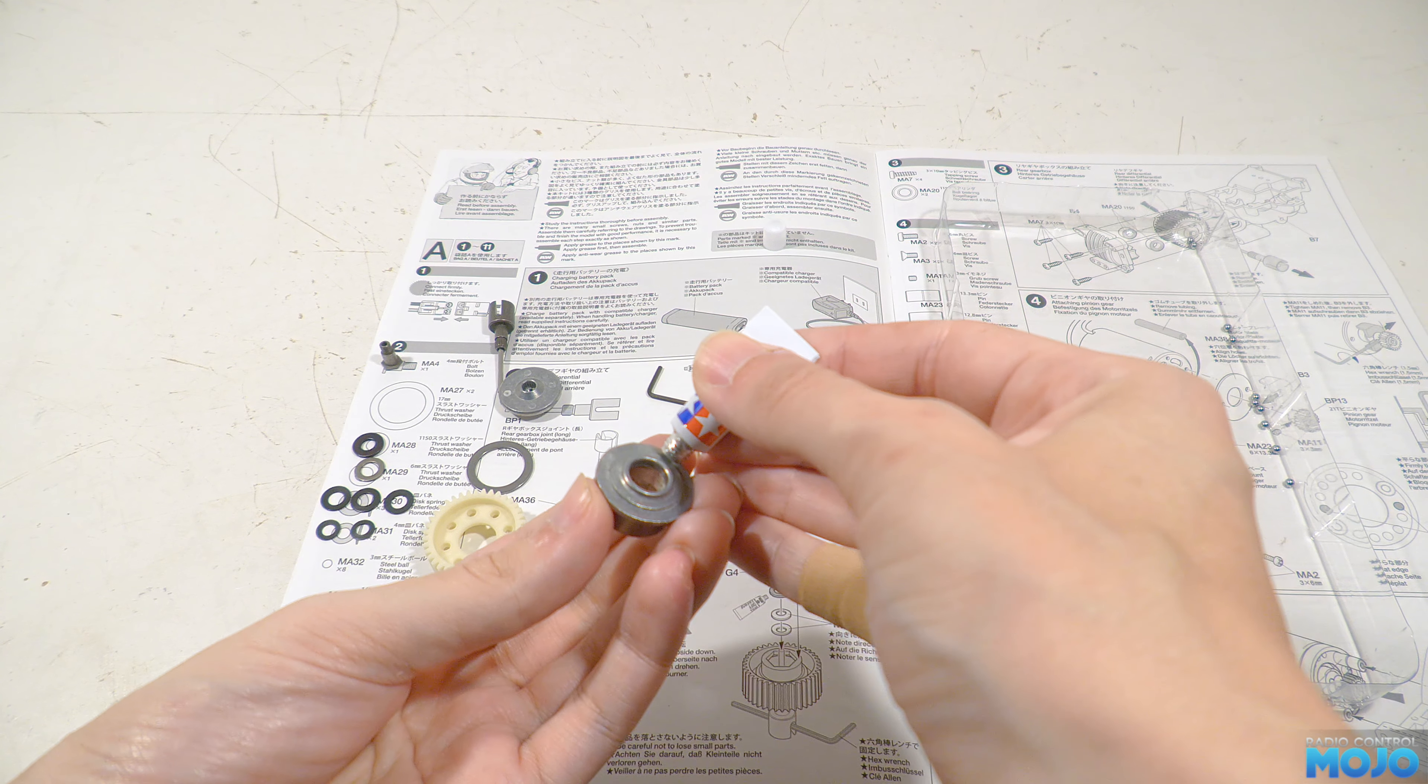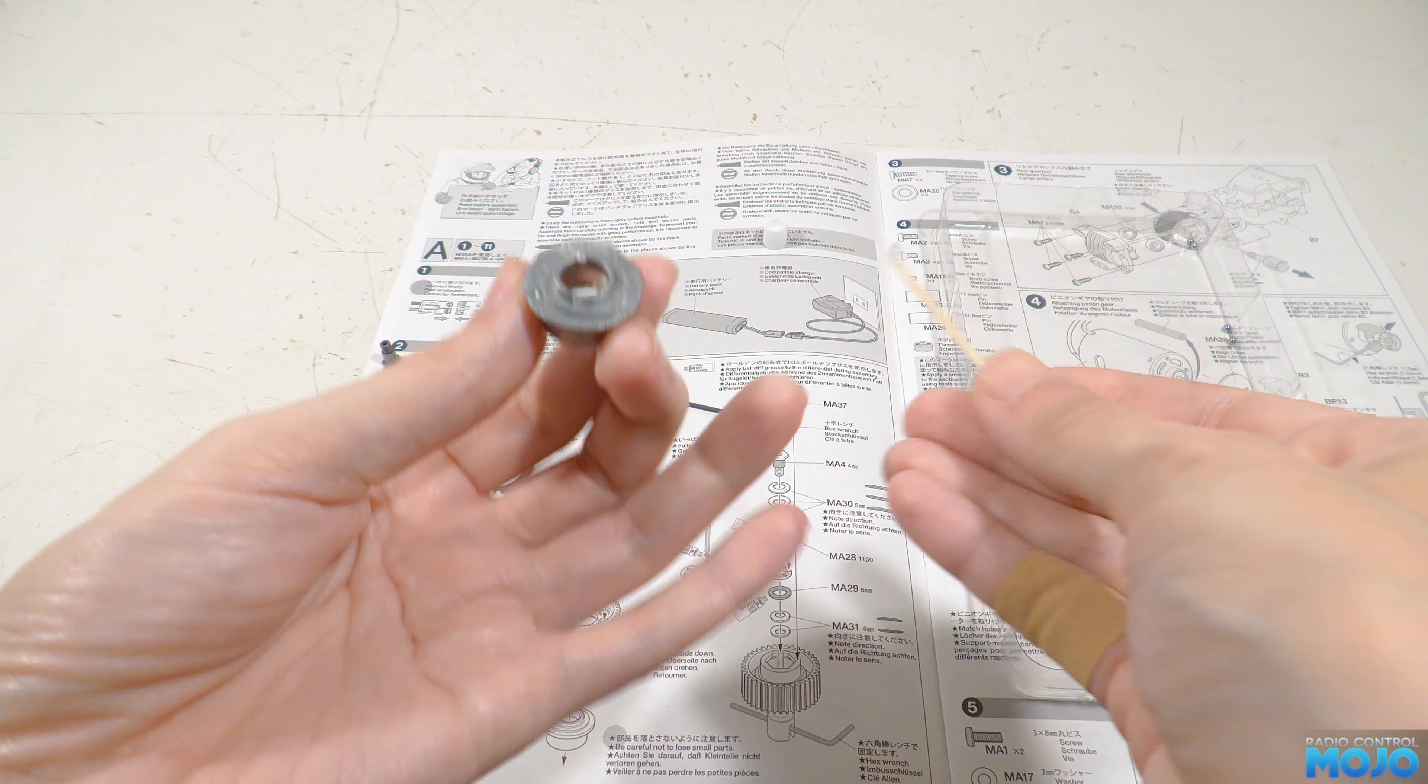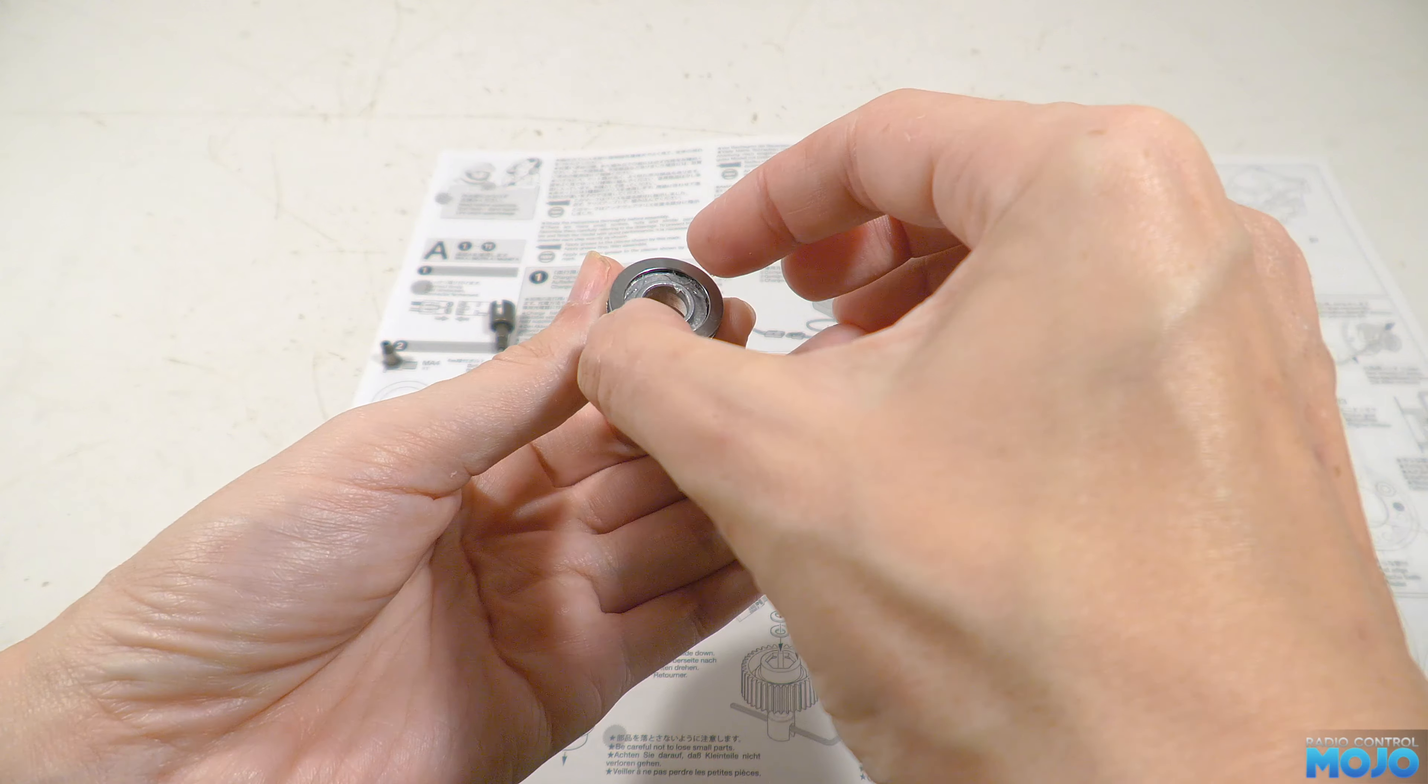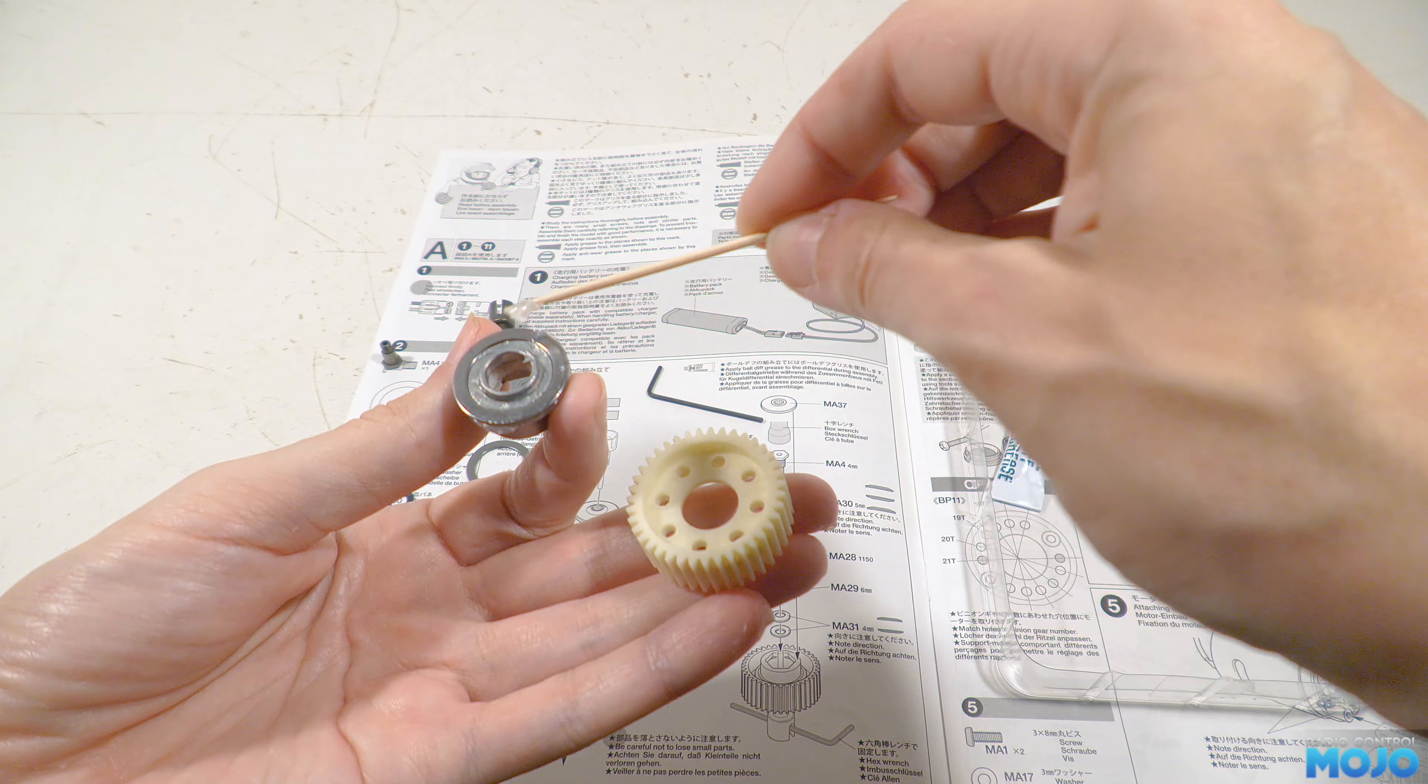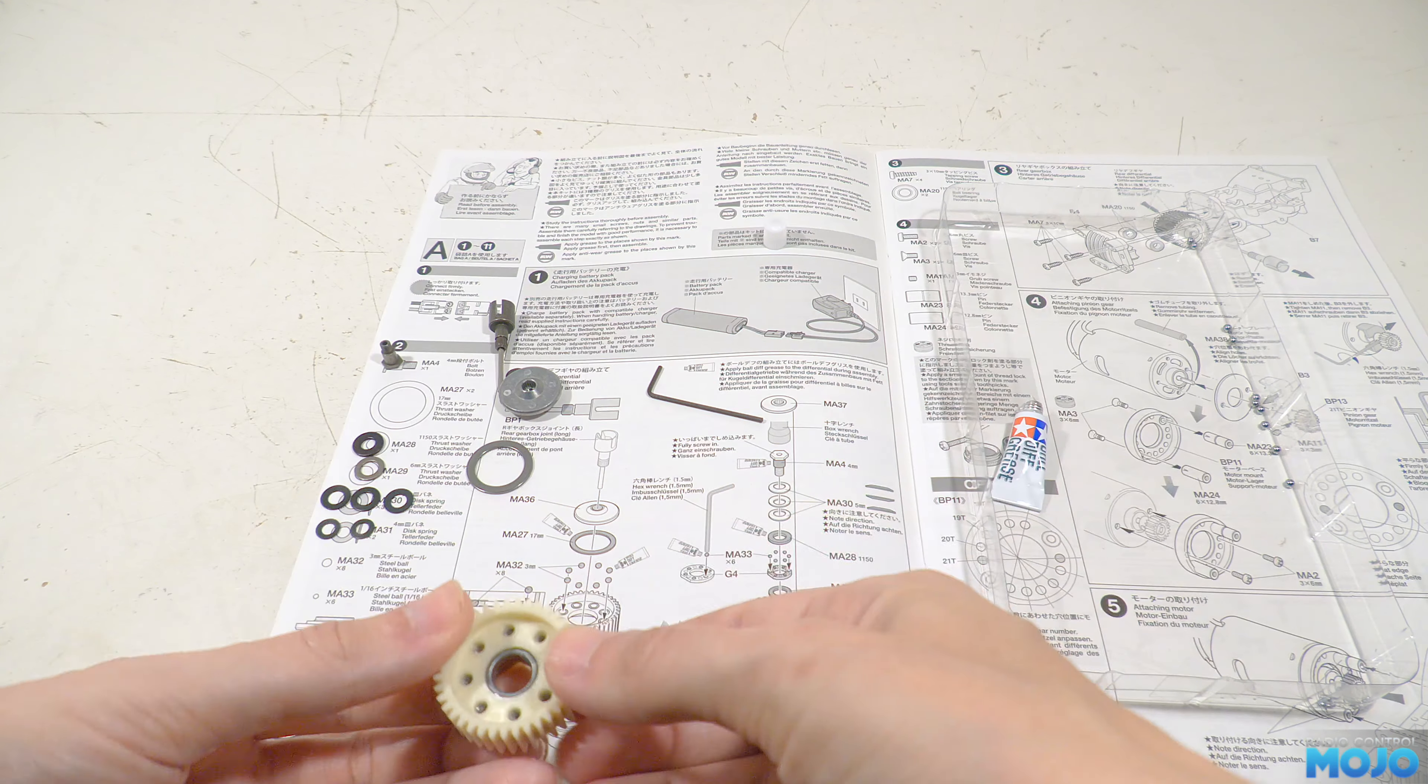First we'll take pressure plate A and apply a little bit of ball diff grease where the thrust washer sits, spreading it out with a cocktail stick. You don't need a whole lot of grease, and of course any excess will just get squeezed out when we tighten the diff at the end anyway. Next a thrust washer goes on. Now make sure the rounded side is facing up and away from the pressure plate. Add a little bit more grease to the face of the thrust washer, then we can offer up the gear.